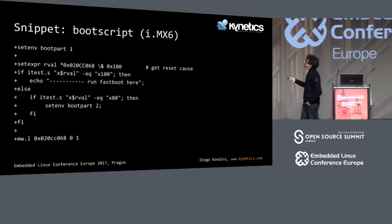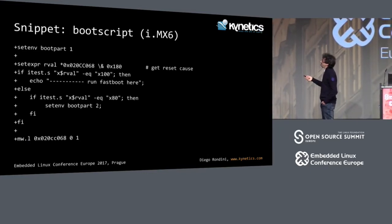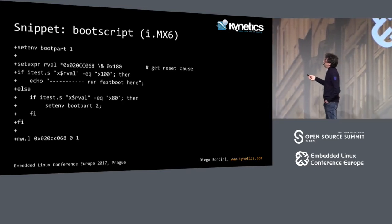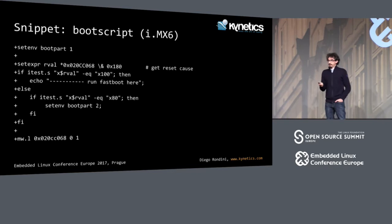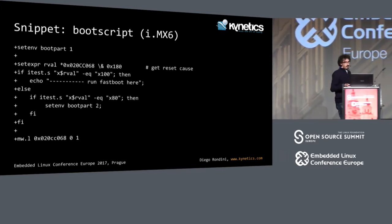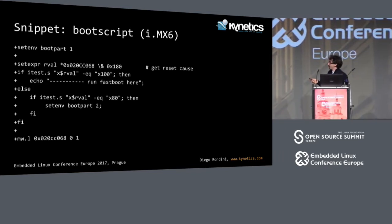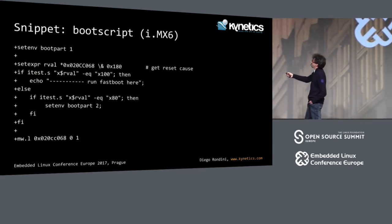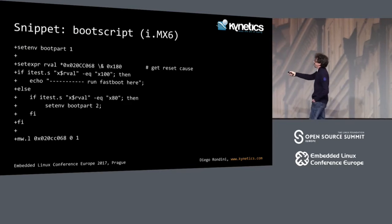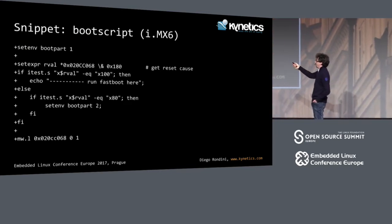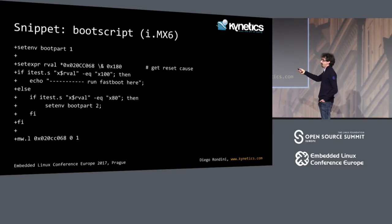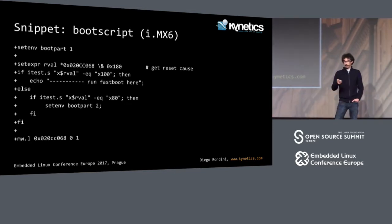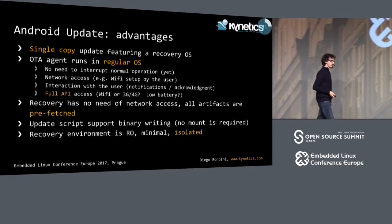This is how the i.mx6 platform manages the selection of the recovery system. When a special register — one of the reset codes — is read and its value matches what you want, it starts with the second partition, which is the one used in Android for the recovery system.